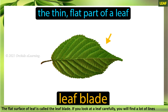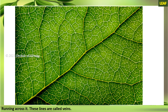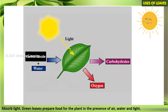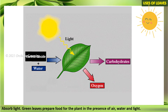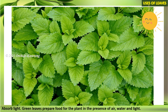Leaf: the flat surface of a leaf is called the leaf blade. If you look at a leaf carefully, you will find many lines running across it. These lines are called veins. Uses of leaves: leaves make food for the plant; therefore, they are also known as the kitchen of the plant.